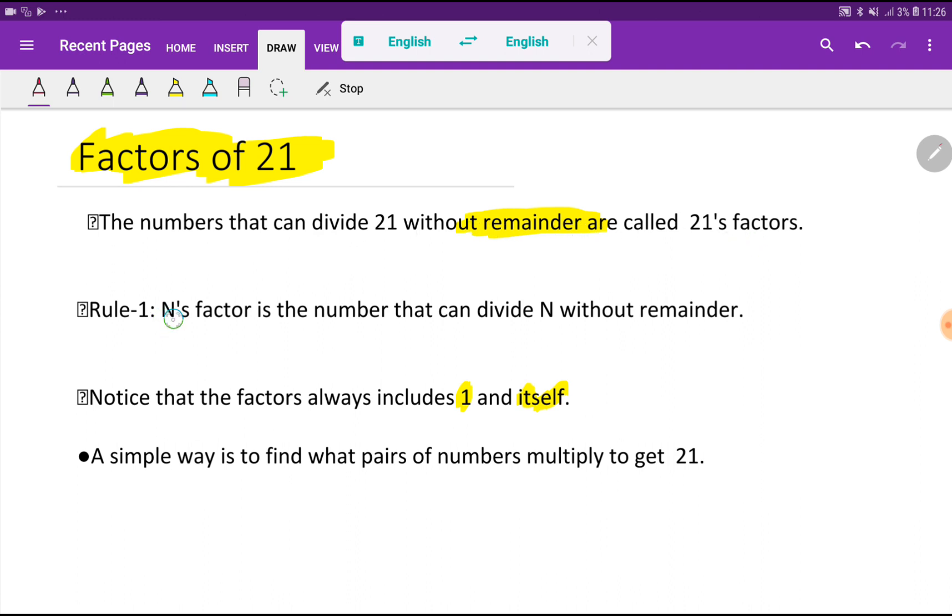Here is the general formula that you can remember to find out factors. N's factor is the number that can divide N without remainder. Notice the factors always include 1 and itself.